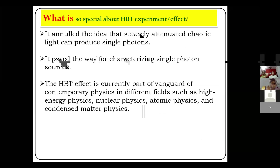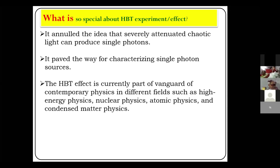This Hanbury Brown and Twiss experiment cancelled the idea that severely attenuated chaotic light can produce single photons. Initially it was assumed that if you reduce the intensity of the light, the number of photons emitted would be very low, and a single-photon regime could be reached. This was challenged by this experiment. So we started new ways for characterizing single photon sources.